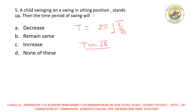Maan lo yahan pe koi jhula hai aur koi child baitha hua hai. Pehle baitha hua tha — jab child stand up hoga, toh iski length decrease hojayegi. Ab length decrease hogayi toh time period bhi decrease karega. Toh option A correct rahega — time period decrease karega kyunki child ke khade hone se rope se surface tak ki distance kam ho jaati hai.